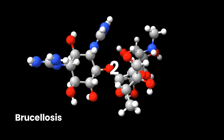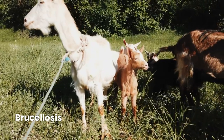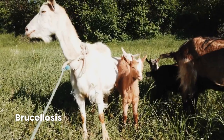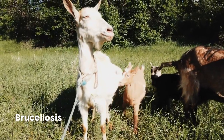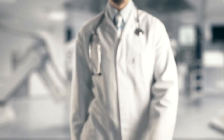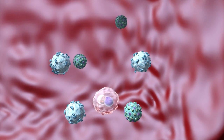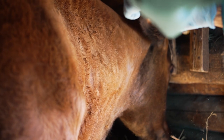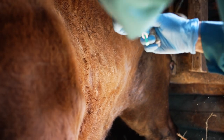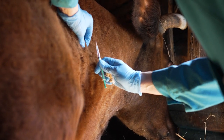Number two: brucellosis. Brucellosis, a bacterial infection, can affect goats, sheep, cows, and wild ruminants, posing a risk to humans. Symptoms include abortion, stillbirths, and reduced milk production. Preventive measures like vaccination and hygiene are crucial to reduce transmission.